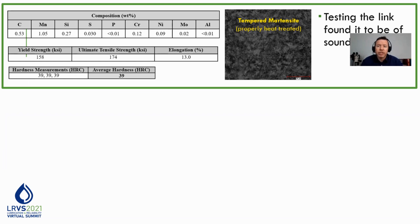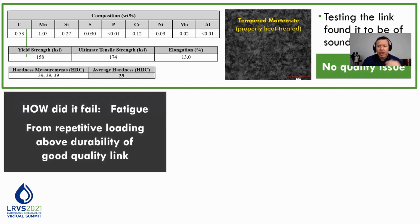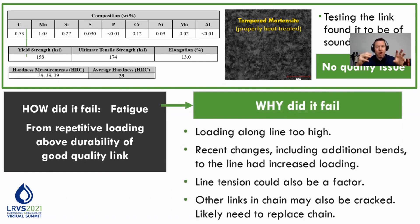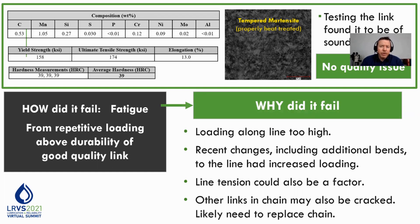The chemistry, hardness, strength, and microstructure are all fine. We can come back and say your link has no quality issue — you guys broke a perfectly good link. Going back to our logic train, that means we have a fatigue failure caused by repetitive loading above the durability of the link, but the link itself is okay. So through elimination, we know this link failed because the loading on the line was too high. That now allows the remainder of the RCA to focus on why the loading was higher than it should be. Of course, one of the key suspects is that it had been operating for 15 years with no trouble, but two years ago they modified it. We're going to start looking at what those modifications to the line were — in particular, bend radii and the line tension applied afterwards.